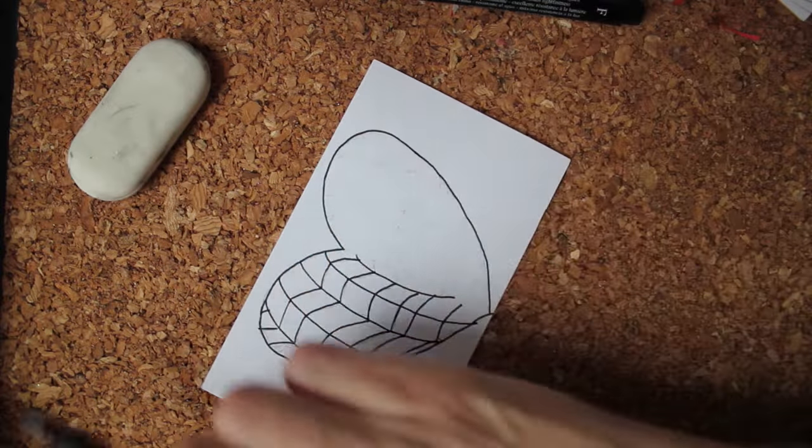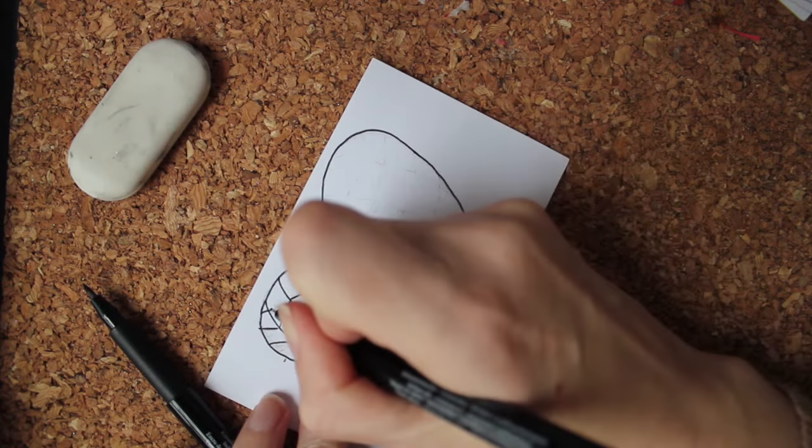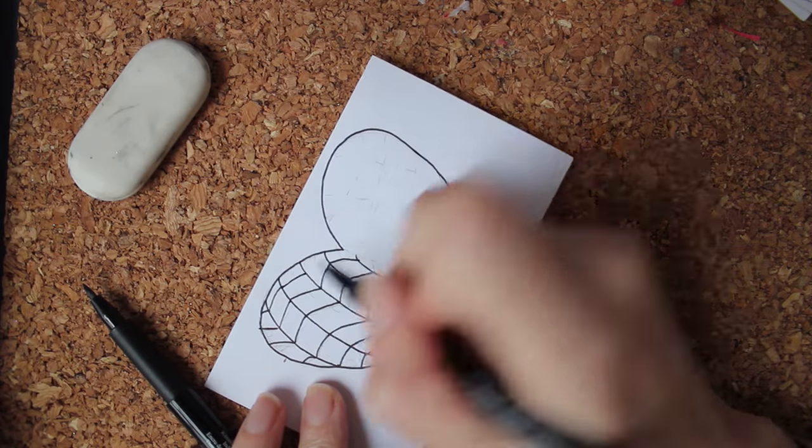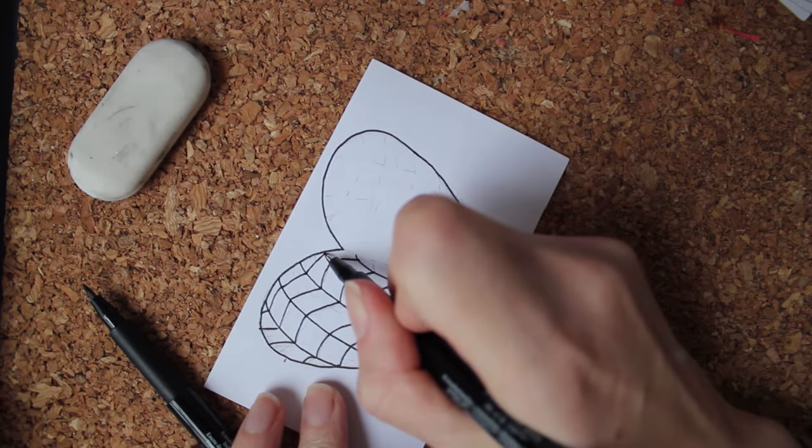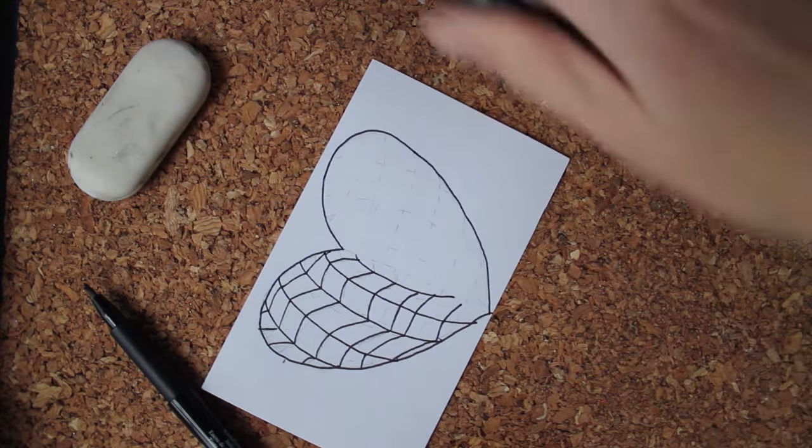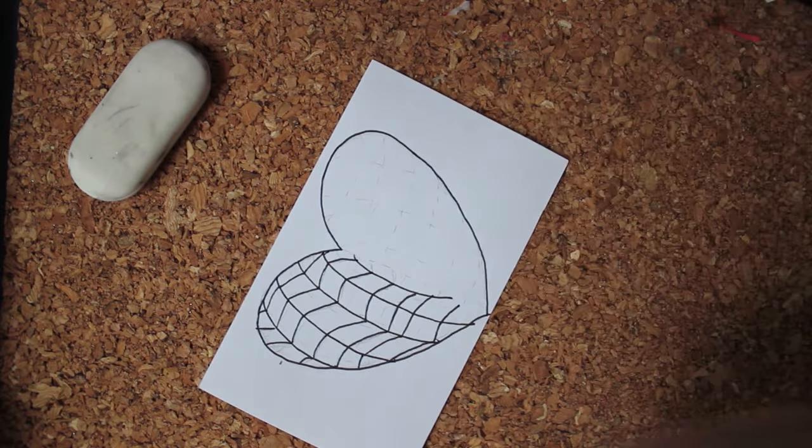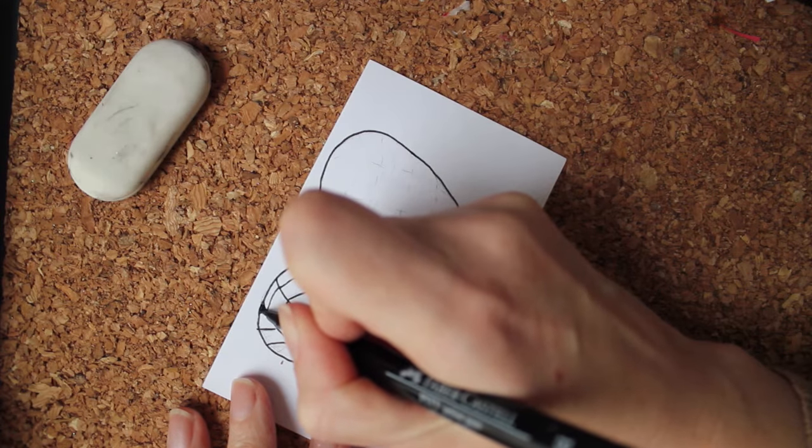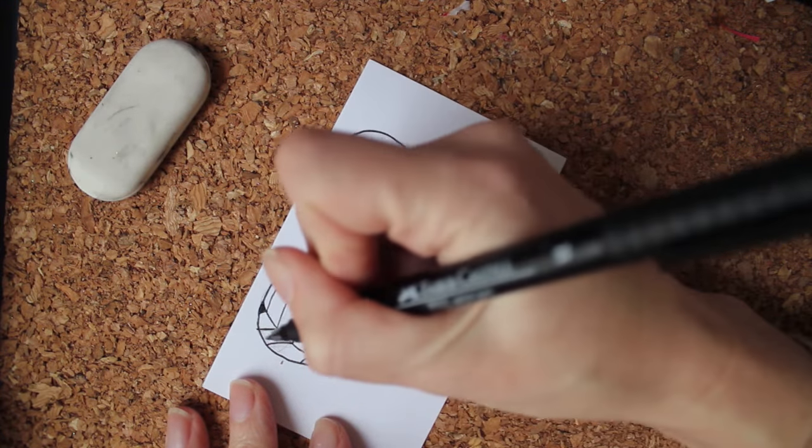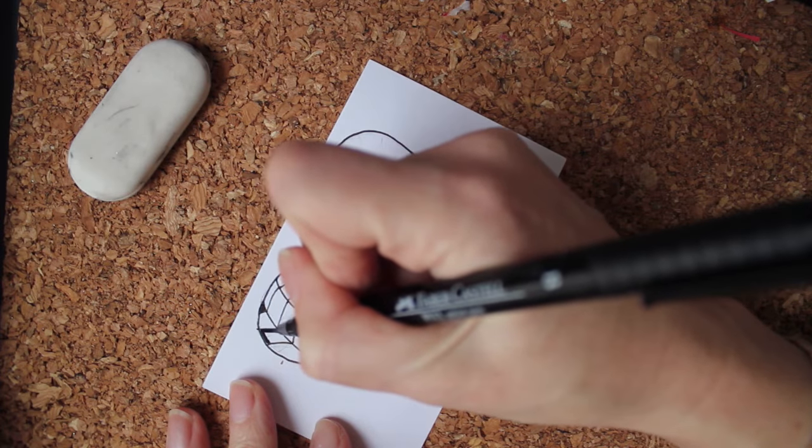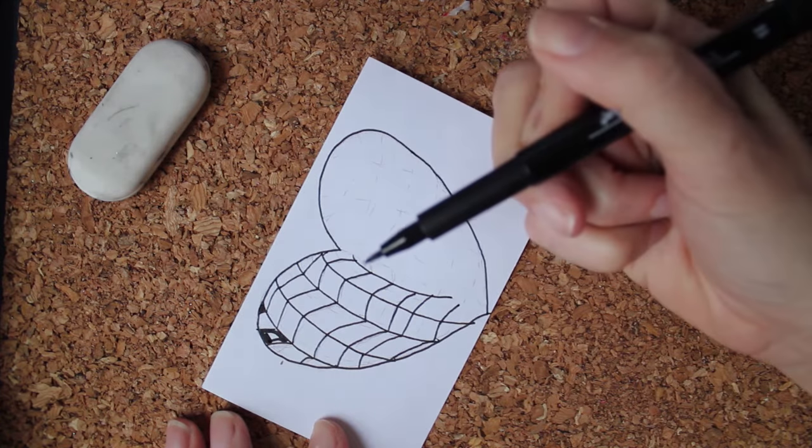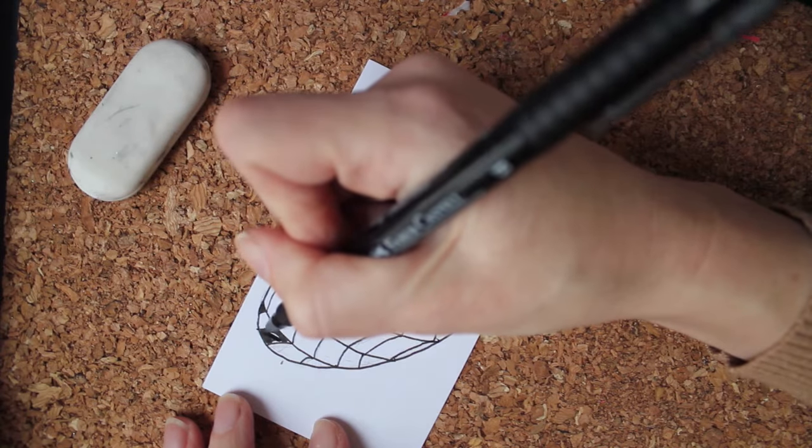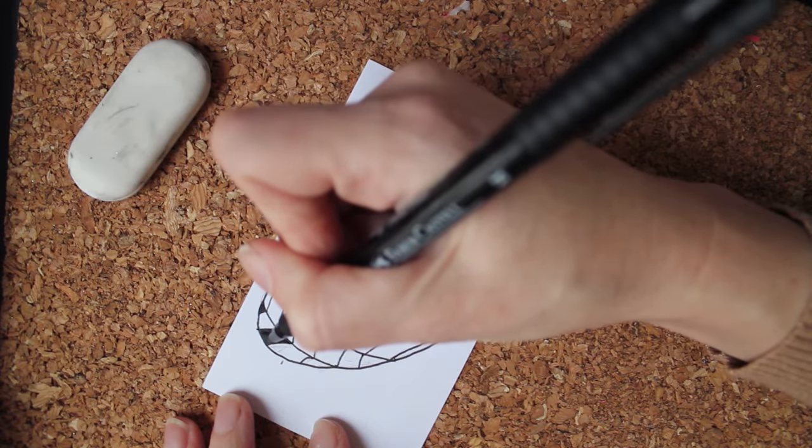As for markers, you can use a Sharpie fine point, which would be great. I am using artist markers that you can get at any craft store. These have four different tips. This one looks almost like a paintbrush tip and it works that way.